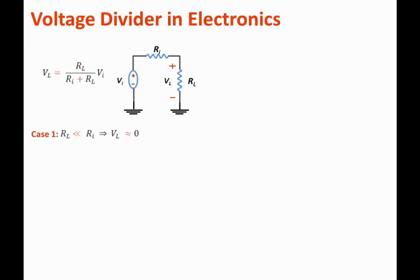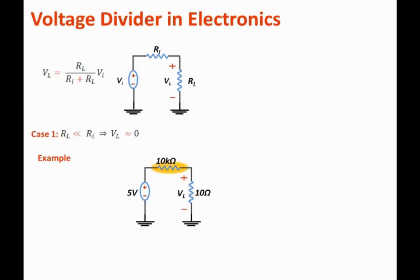Then we can assume that the voltage across the load, VL, is approximately zero. Let's show that through a numerical example. We have a 5-volt voltage source connected to a 10 kilohm resistor, and the load is a 10-ohm resistor. Clearly, the load resistance is much, much smaller than the internal resistance of 10 kilohms. Applying the voltage divider equation: VL = 10 over (10k + 10) times 5 volts, which equals 0.0099 volts — about 10 millivolts. This is very small compared to 5 volts, so we can approximate it to be roughly zero.